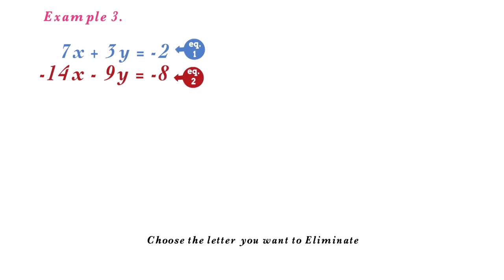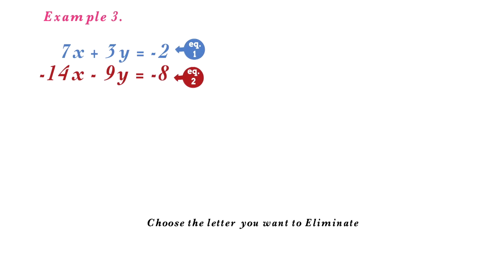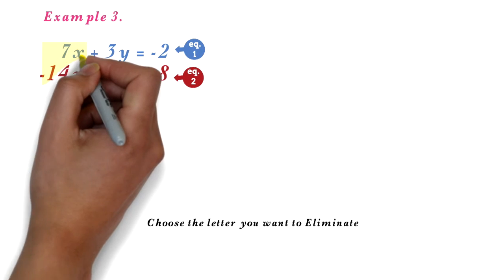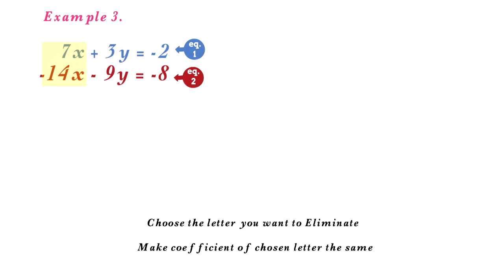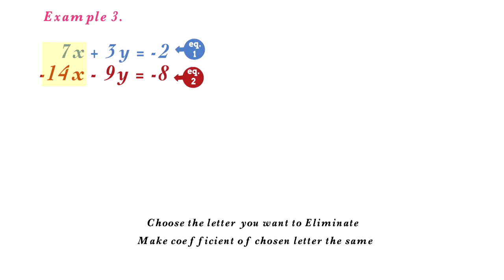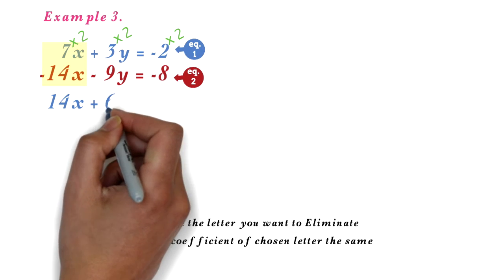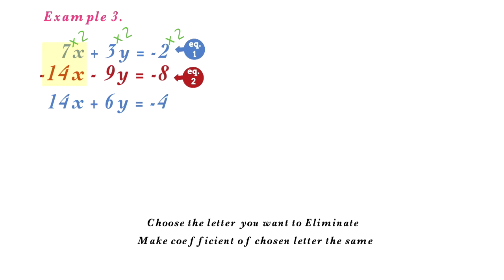The first step is to choose the letter you want to eliminate. I will choose x. Next, you want to make the coefficient of x the same. Here none of the coefficients are the same, so check if one is a multiple of the other. We see that 14 is a multiple of 7 — 7 times 2 gives us 14. So we multiply equation 1 by 2, giving us 14x plus 6y equals negative 4. We will call this equation 3.